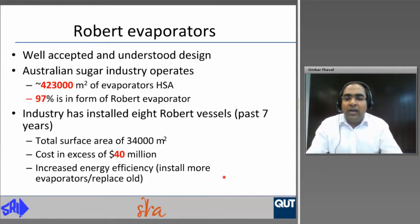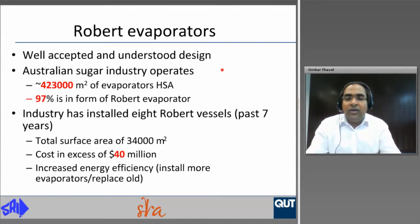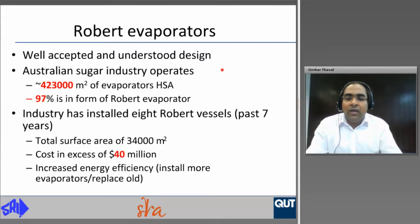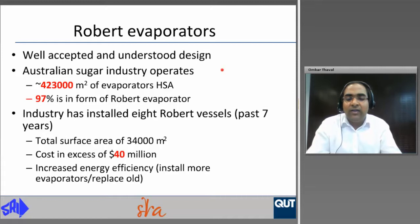Multiple effect evaporation can be used with any evaporator type. Since this study regards robot evaporators, the robot evaporator is a well accepted and understood design not only in Australia but in most overseas sugar industries. The Australian sugar industry currently operates with 423,000 square meters of evaporator heating surface area, of which 97 percent is in the form of robot evaporator. The industry has installed eight robot vessels in the past seven years with a total surface area of 34,000 square meters and cost in excess of 40 million dollars. In the next decade, factories are expected to install more evaporators and replace old ones to increase energy efficiency, justifying this study.